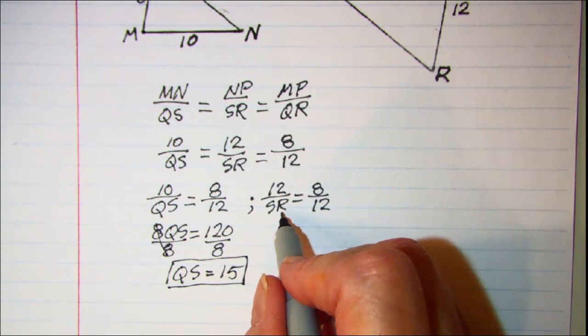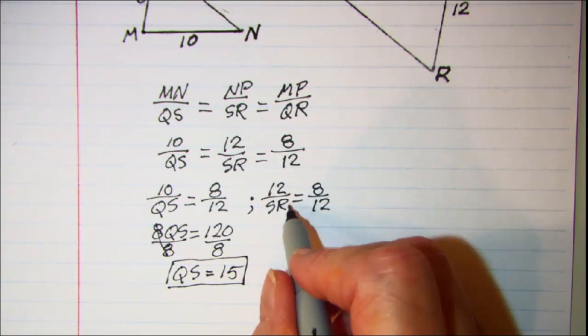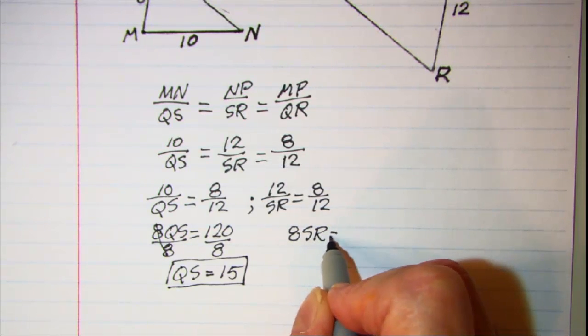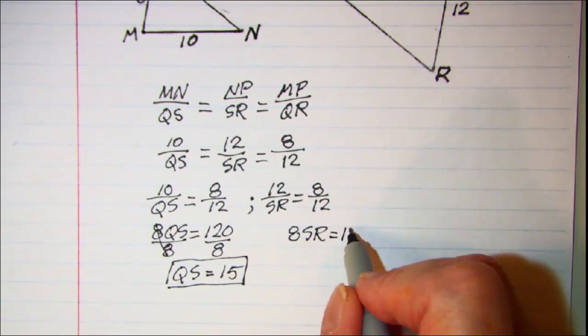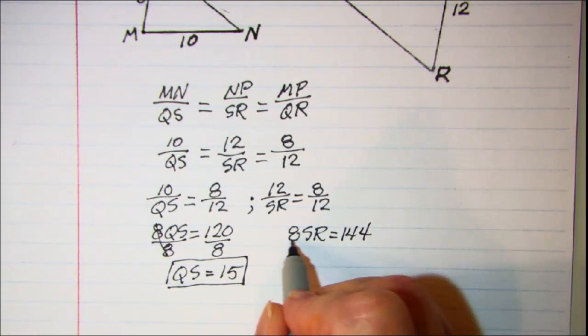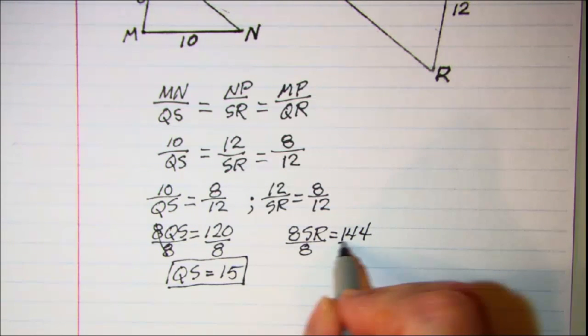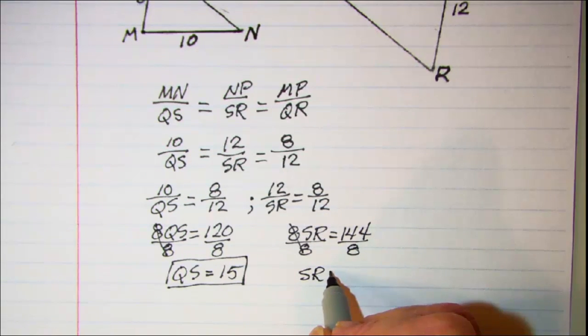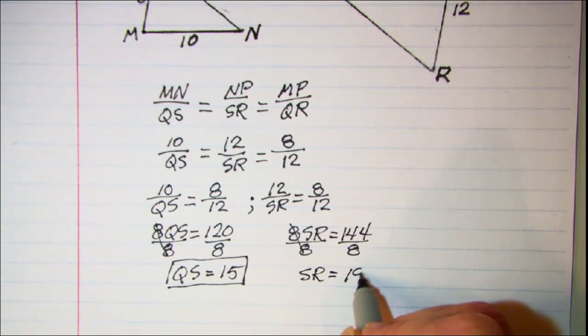Then on this proportion, again cross multiplying, we get 8 times SR is equal to 144. Divide both sides by 8, these will cancel, and SR is equal to 18.